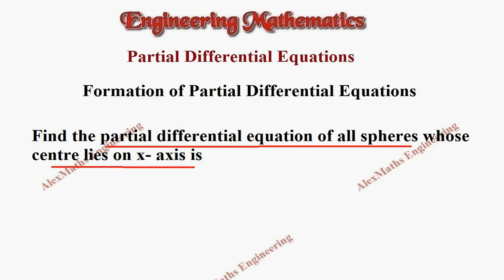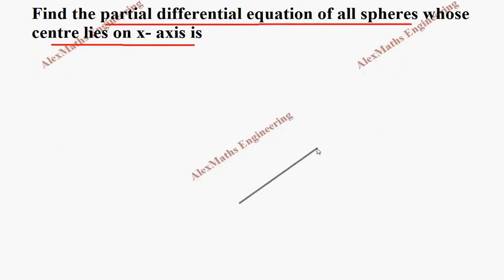If we take a three-dimensional axis, this is x, this is y, and this is z. Any randomly chosen point will have ABC as a point. Let's mark the coordinates: x, y, and z.